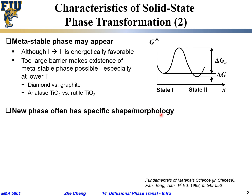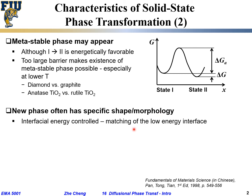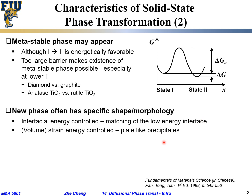Another feature is that the new phase formed often has a specific shape, called morphology. For systems that are interfacial energy controlled — where the new phase and the old solid phase have a large interfacial energy — the transformation tries to find the lowest-energy interface between the two phases. The shape of the crystal is determined by how well the initial and final states match and how large a barrier exists between them. For strain energy-controlled systems, precipitates often form to reduce the volume free energy and lower the system's Gibbs free energy.